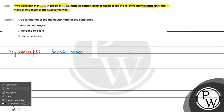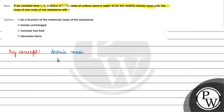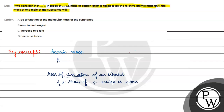Atomic mass is basically the mass of an atom of an element divided by 1/12 the mass of a carbon-12 atom. So atomic mass equals mass of an atom of an element divided by (1/12 × mass of a C-12 atom). Now we are told that instead of 1/12, we take 1/6.